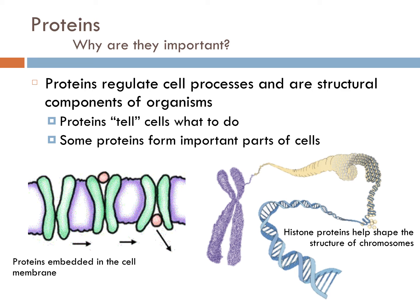For example, the pictures at the bottom of your screen: the one on the left shows the cell membrane, and those green spots are protein channels and protein pumps that are embedded in the cell membrane. Those move materials across the cell membrane that would not normally be able to cross it. On the right, we have histone proteins, which help shape your chromosomes by coiling the DNA — it's called a super coil — around those histone proteins.